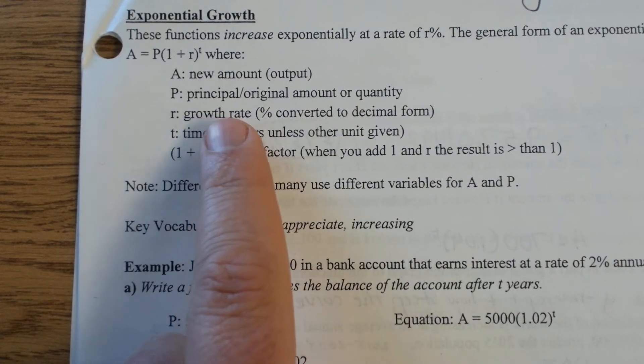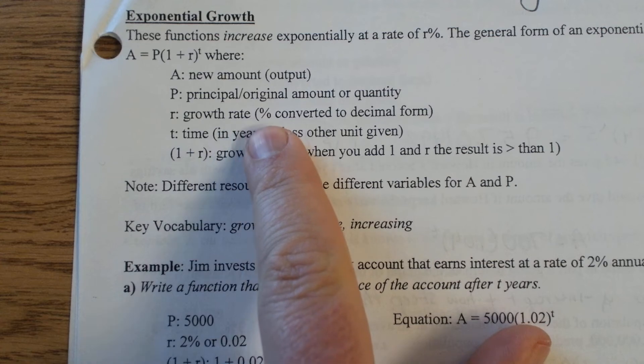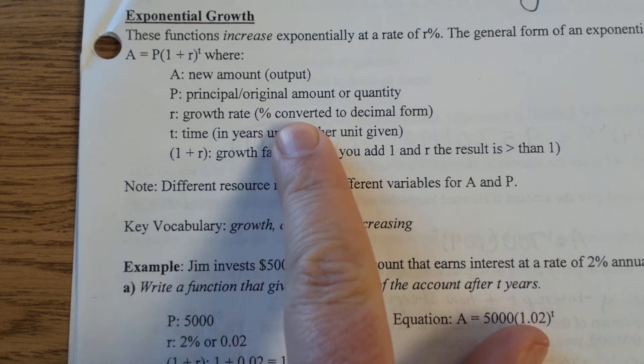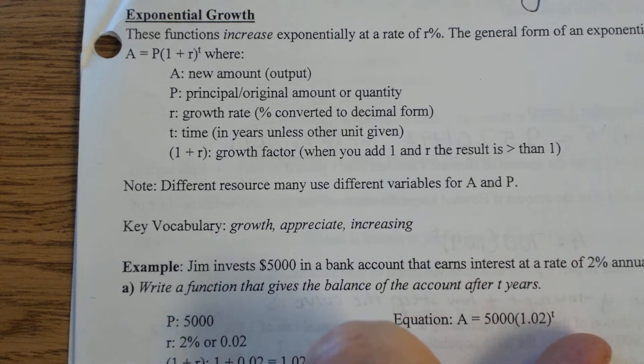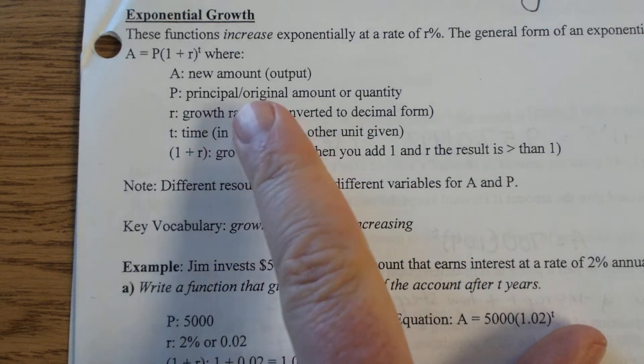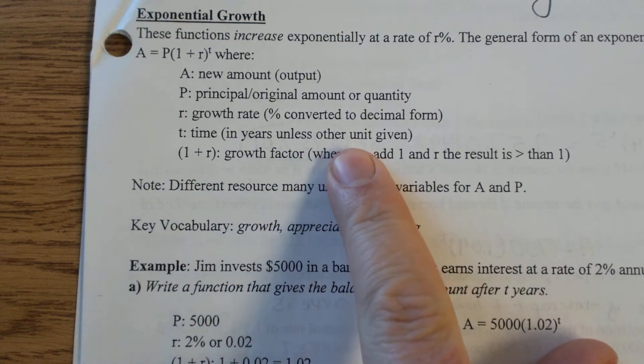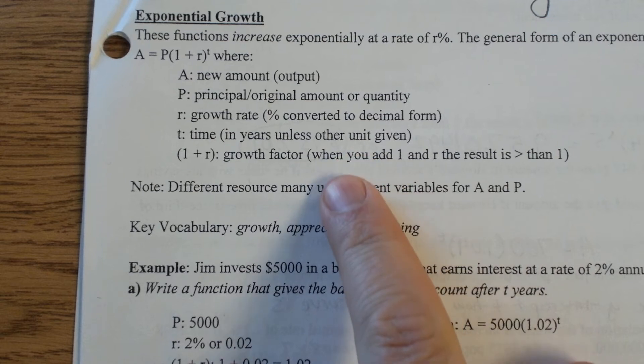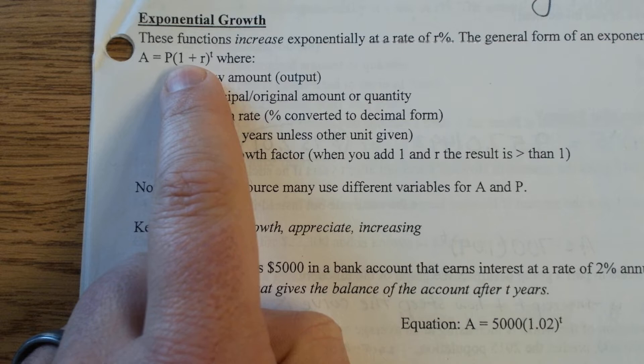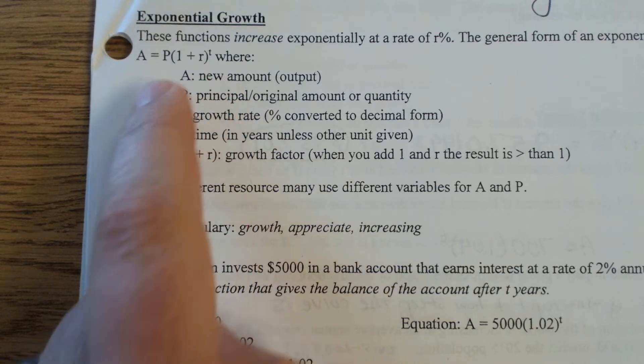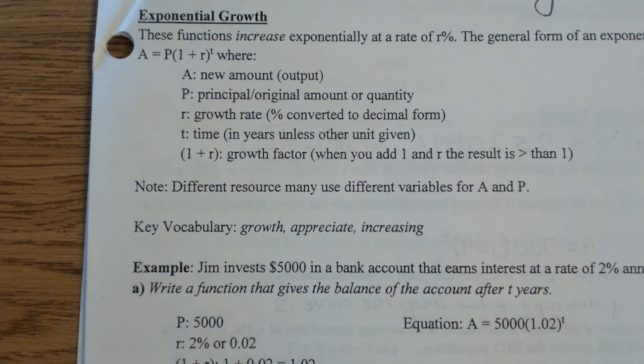The R is your rate of growth, so percentage of change will usually be expressed in the question or problem as a percentage and then you need to convert it to a decimal place. Remember the easiest way to do that is just move your decimal two spots to the left from the original way it's presented. Time for now will be in years unless it's otherwise stated. And then this expression here, one plus your rate, since that number will be bigger than one, that's what's going to cause the exponential growth.